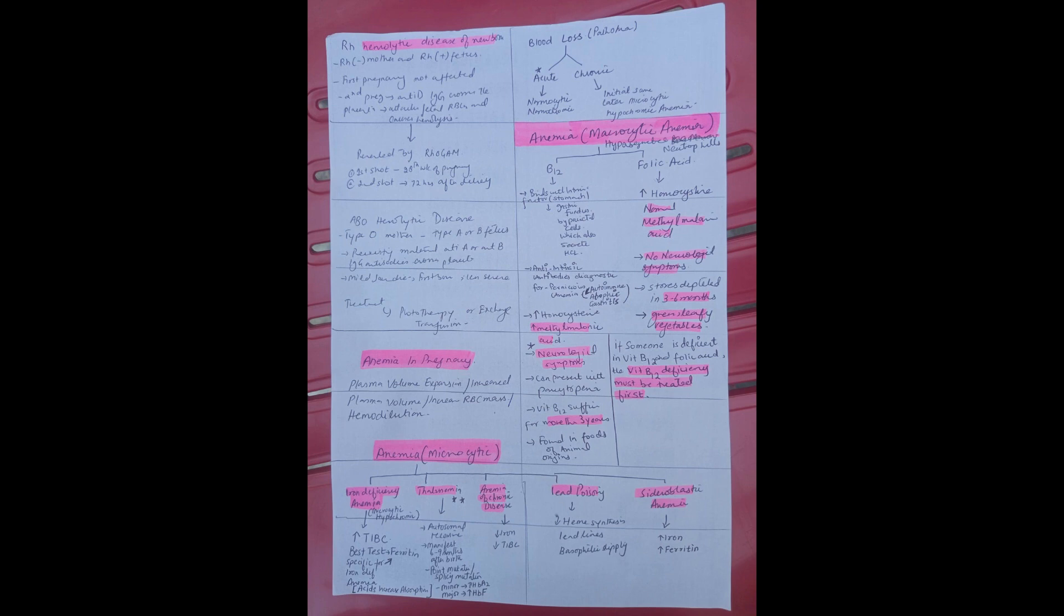Now let's move on to the next point, and that is anemia in pregnancy. The most common cause of anemia in pregnancy is hemodilution. Plasma volume expansion, increased plasma volume versus increased RBC mass.